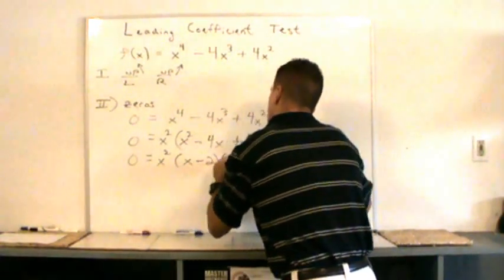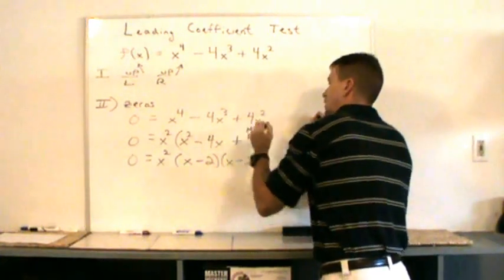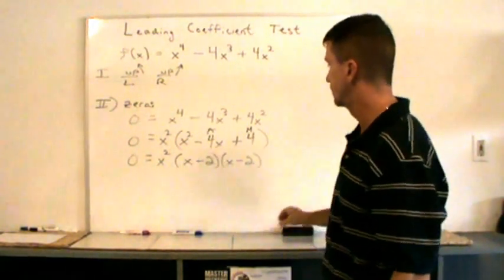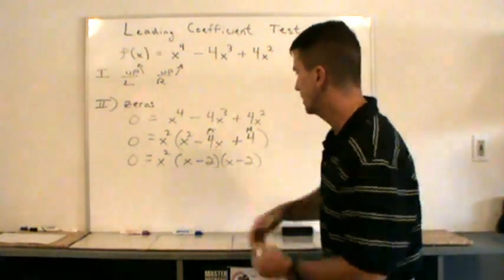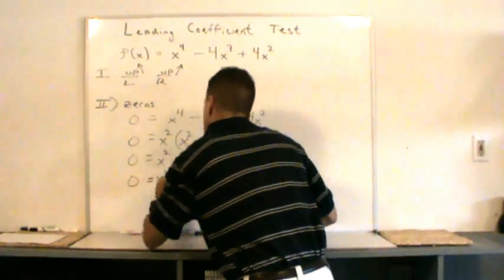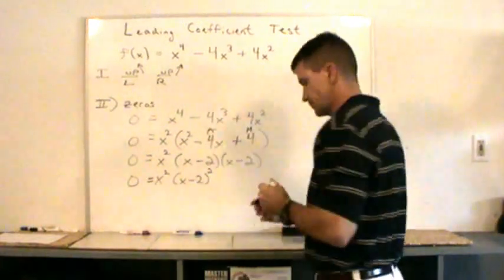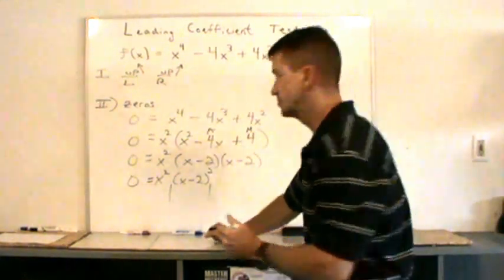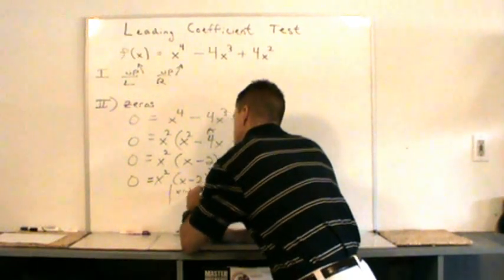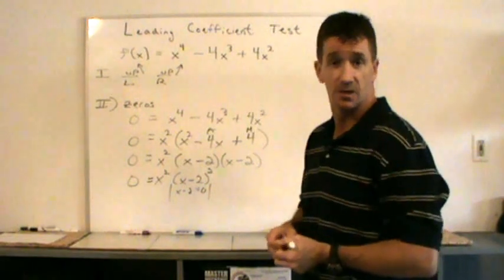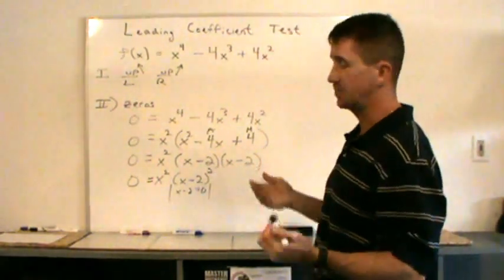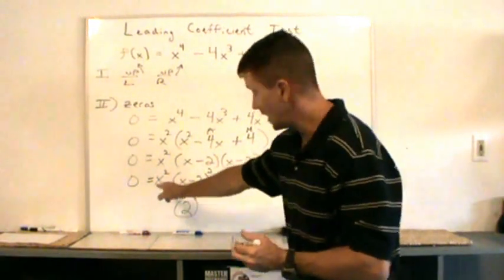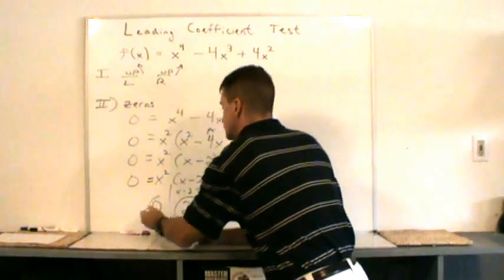That factors to (x - 2)(x - 2), because we need two numbers that multiply to positive 4 and add to negative 4. Negative 2 times negative 2 is positive 4, and negative 2 plus negative 2 is negative 4. We can rewrite this as (x - 2)². Setting each factor equal to zero: when (x - 2)² = 0, then x = 2; and when x² = 0, then x = 0. So we have two zeros.